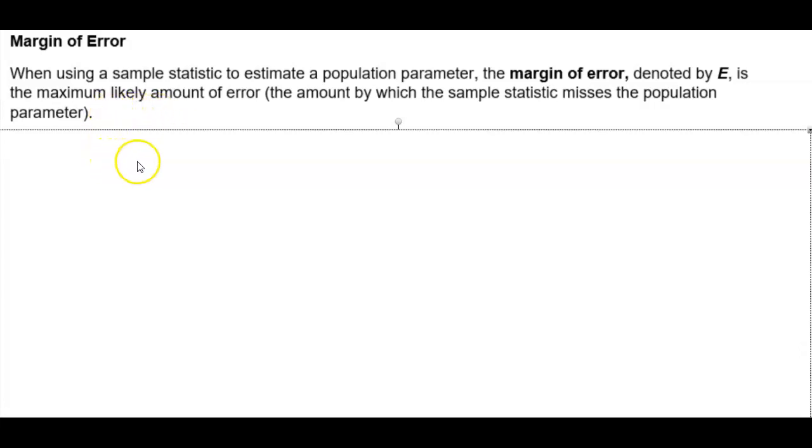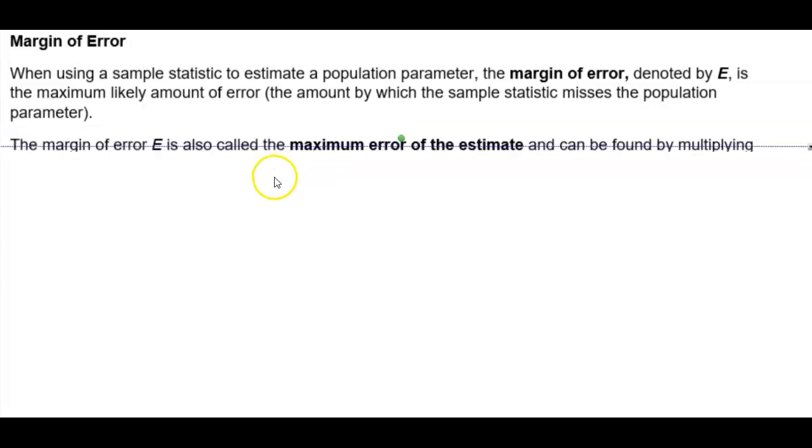Margin of Error. When using a sample statistic to estimate a population parameter, the margin of error, denoted by E (capital E), is the maximum likely amount of error, the amount by which the sample statistic misses the population parameter.